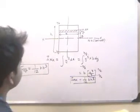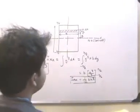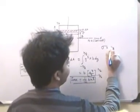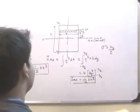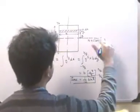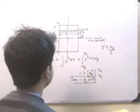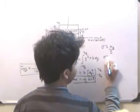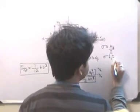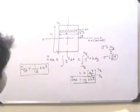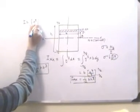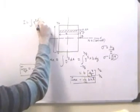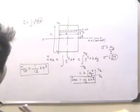Now the neutral axis is axis XX, and we know that sigma, the bending stress, is given by MY by I, where M is the bending moment, Y is the distance of the point where we want to find the stress from the neutral axis, and I is the moment of inertia. So essentially sigma will be minimum if I is greater. And how can we make I greater? I is nothing but the integration of Y squared dA. So to make I greater, we need to put elementary areas as far apart from the neutral axis as possible.